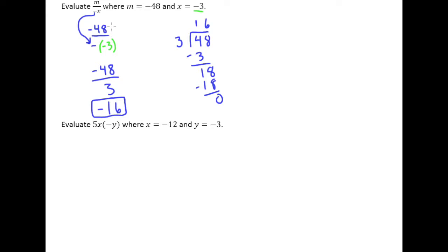I didn't do that up here with my negative 48, I realized, but it's because it was all by itself on top. But usually, that's something you want to do. And this is definitely a case where you need to make sure parentheses go around both the negative 12 and the negative 3 as you plug it in. So we have the 5, and then we're multiplying by x, and x is negative 12.